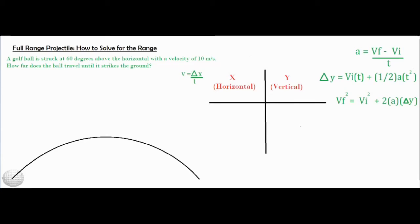In this video we're going to be talking about how to solve for the range for a full range projectile struck at ground level. So we have a golf ball struck at 60 degrees from the horizontal. It has a starting velocity of 10 meters per second and we're wondering how far does it travel until it strikes the ground.